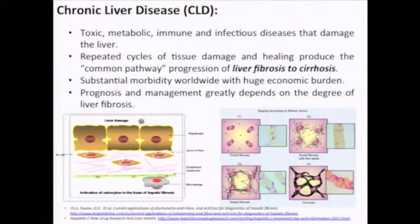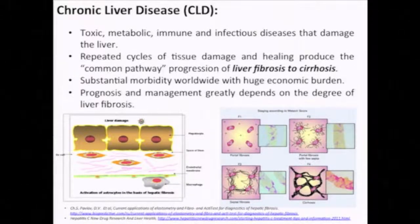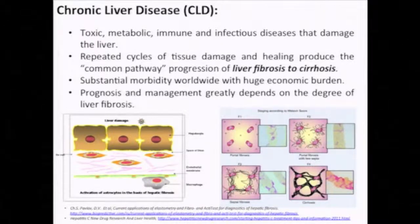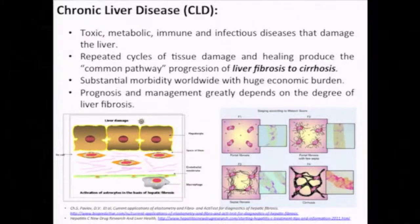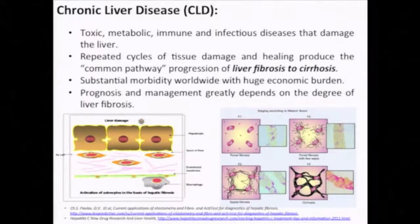Chronic liver disease has a variety of causes but actually a final common endpoint. The liver, when injured, regenerates itself and fibrous tissue is deposited. The pattern of fibrosis varies across different causes, but with all chronic liver diseases there is a stable, well-known pattern of evolution that begins with fibrosis and ultimately ends up with cirrhosis.